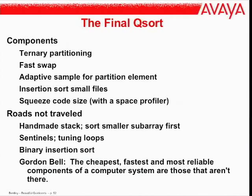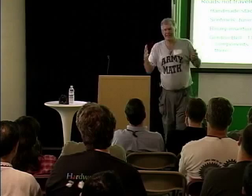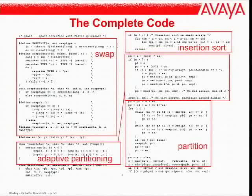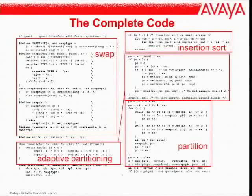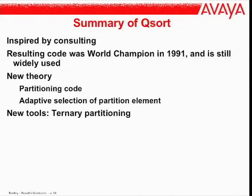Binary insertion sort is N log N comparisons with quadratic data movement — we only use insertion sort when N is less than 8 or 10, so the overhead of binary insertion didn't seem worth it. Here's our complete code: the swap macro, the adaptive ternary partitioning with four pointers, a final insertion sort, and the clever pivot selection. It was the world champion in 1991 and people often still choose it as the benchmark to compare against. We did some nice theory along the way and came up with new tools that led to other interesting algorithms.